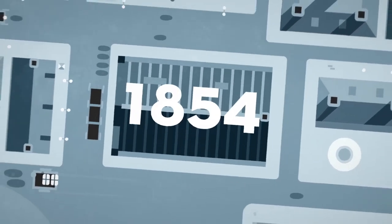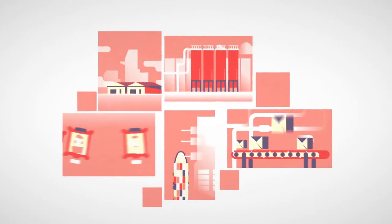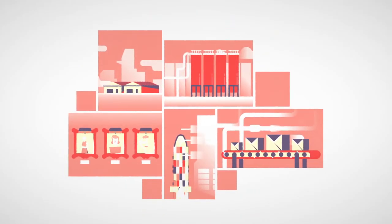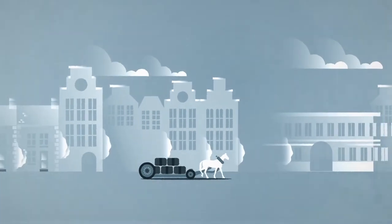What started in 1854 as a local company handling and storing cotton has now become a global supplier of logistics and semi-industrial services in various sectors. Safe to say, Katoen Natie has mastered the art of growing.